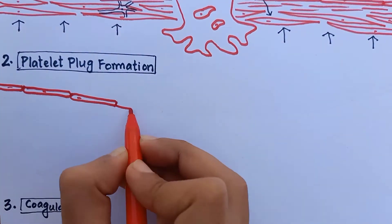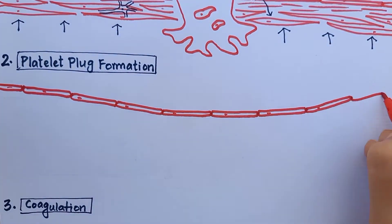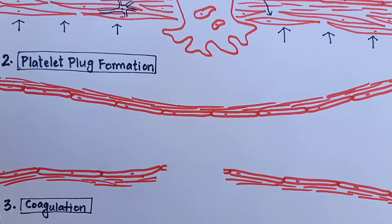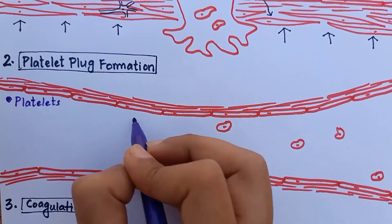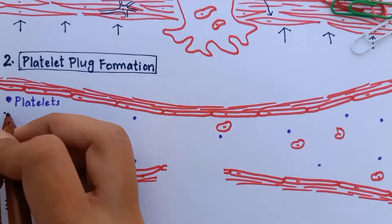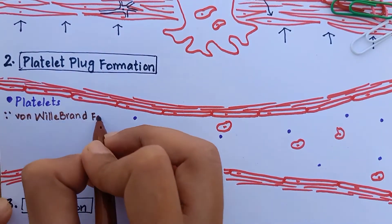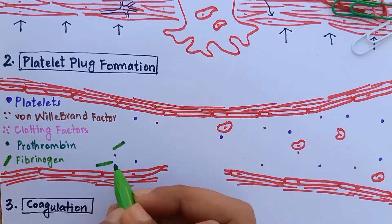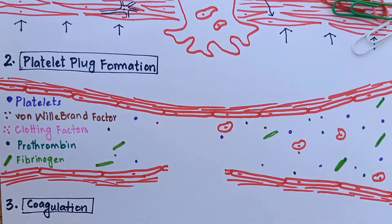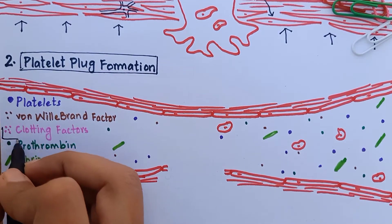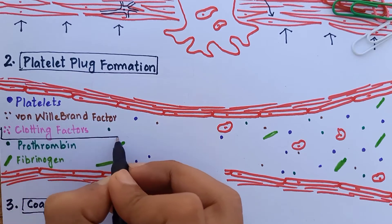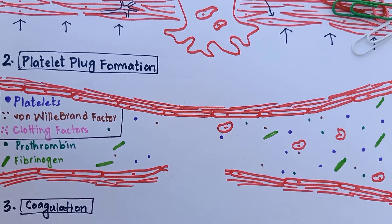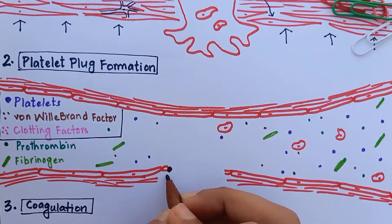After vasoconstriction, we have the second stage of hemostasis: platelet plug formation. Other than red blood cells, there are substances in blood such as platelets, von Willebrand factor, various clotting factors, prothrombin, and fibrinogen. Right now we will be looking at platelets and von Willebrand factor. The clotting factors will come in the next stage. Platelet plug formation can be divided into four parts, the first being platelet adhesion.